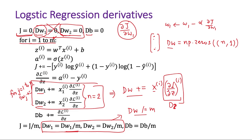Now we are left with just one loop — the outer loop — and we will see how to get rid of that loop in a later lesson. So we will be able to do one step of gradient descent for logistic regression without even a single loop.